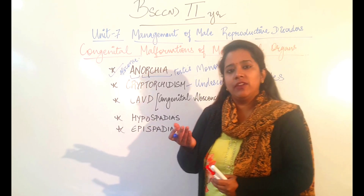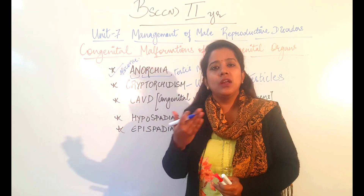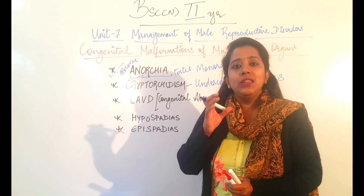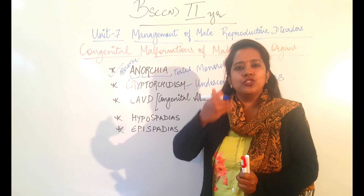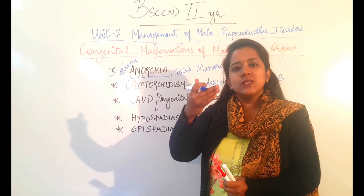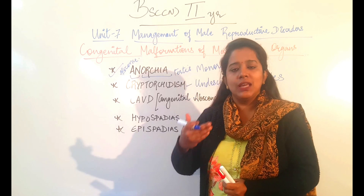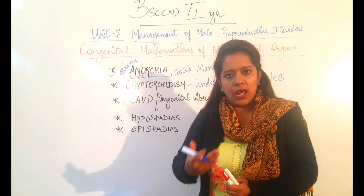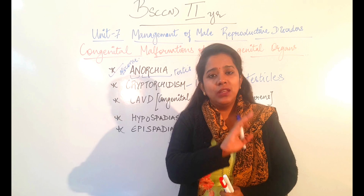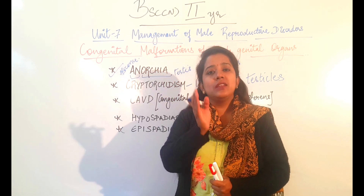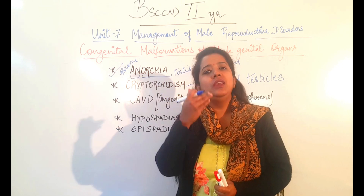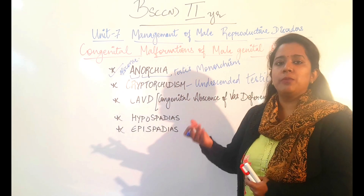Let us look at what happens during fetal development. The testes first start developing in the abdomen. Then, a few months before birth, they slowly descend through a tube from the abdomen towards the scrotum, downwards. That tube is the inguinal canal. So the testes that develop in the abdomen during fetal development descend slowly down to the scrotum through the inguinal canal, just months before birth.